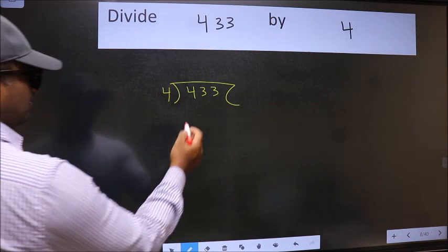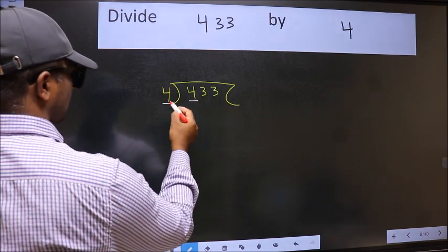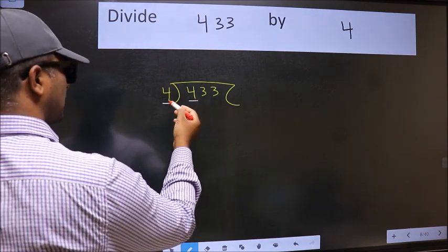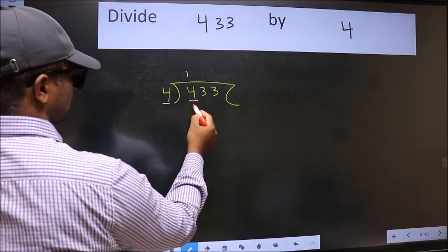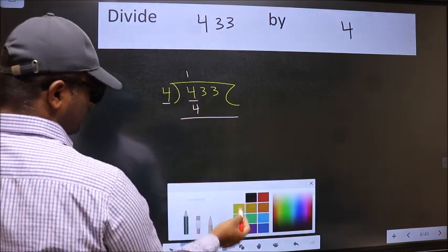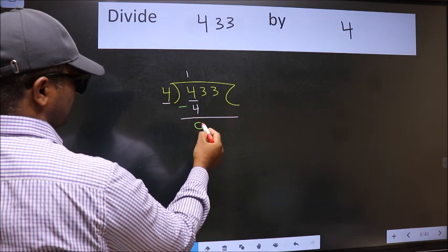Next, here we have 4. Here also 4. When do we get 4 in 4 table? 4 ones 4. Now we should subtract. We get 0.